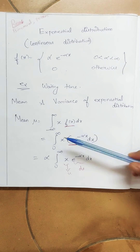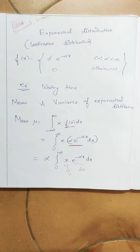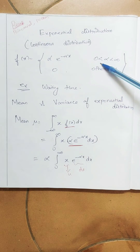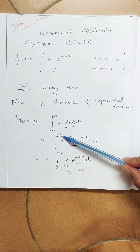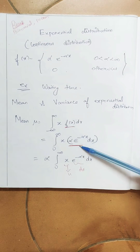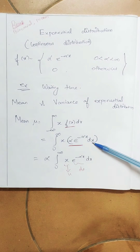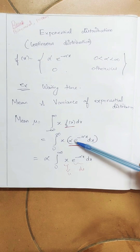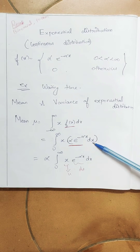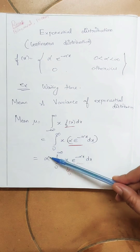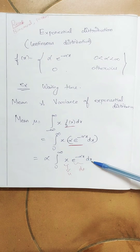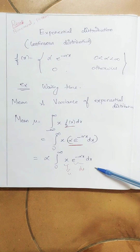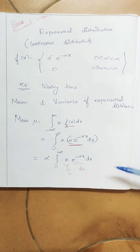A common mistake you do is writing the integral from -∞ to ∞, but my function is valid only from 0 to ∞. So please be careful — write integral from 0 to ∞. I have written x into f(x), which is α · e^(-αx) dx. Now alpha is just a constant because you are integrating with respect to x, so throw alpha outside. We have only the integral from 0 to ∞ of x · e^(-αx) dx.